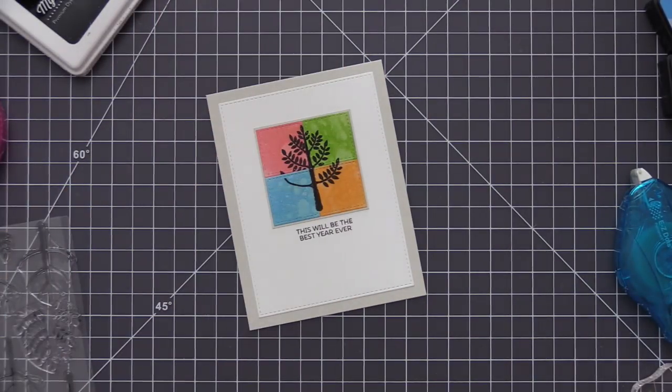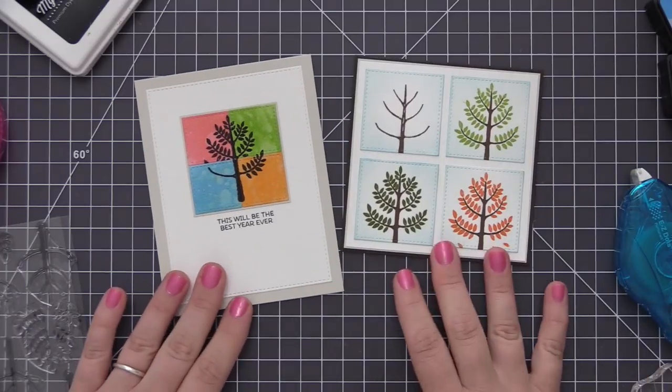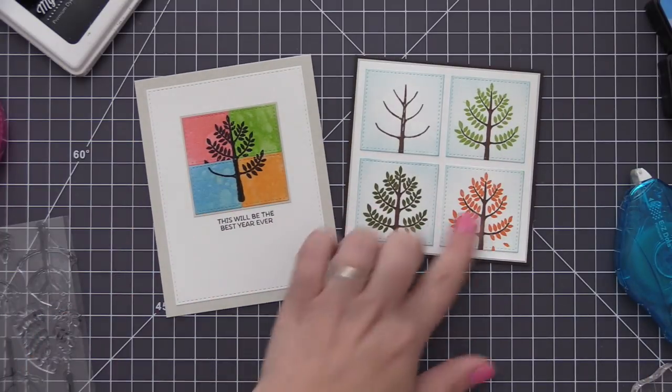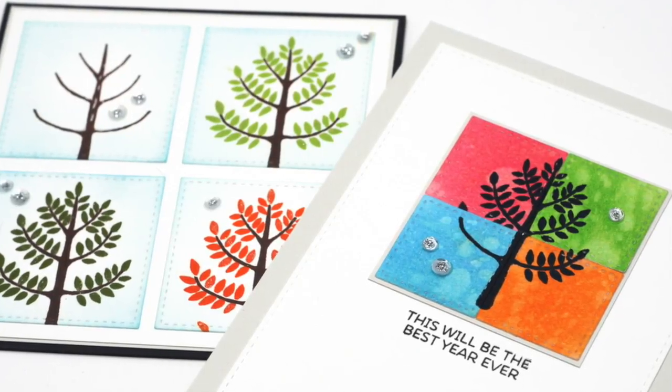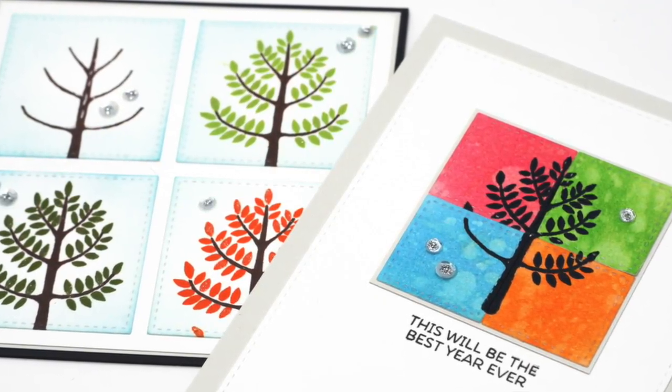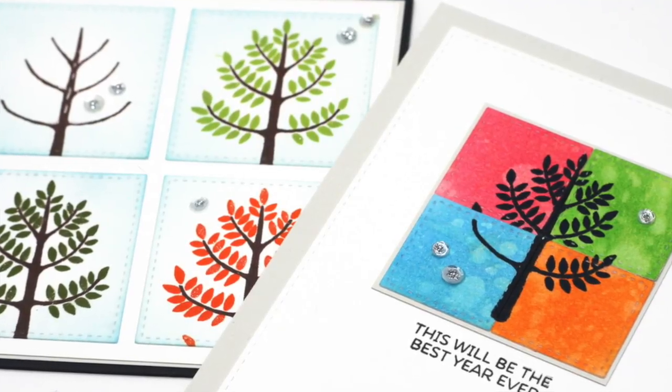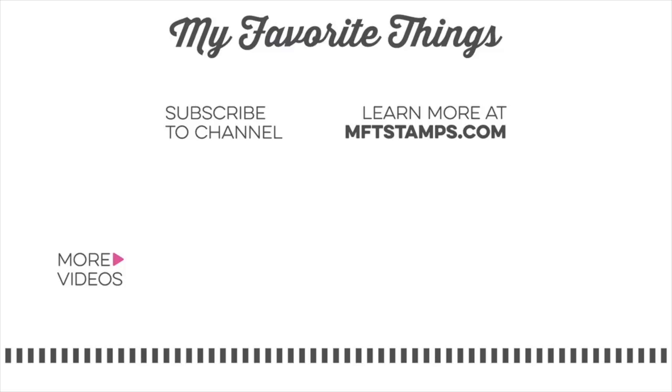I don't have it on camera but I did add some sequins to my finished cards just to add a little bit more detail scattered around those trees and then that is going to complete our two cards that feature the four different seasons using the Modern Tree Stamp set. Thank you so much for joining me for today's video. I really hope you enjoyed it and I will see you in the next one.